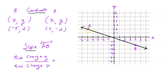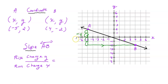Let's make our slope triangle. I'll start at point A — the farthest left point — and then move down and to the right to reach B. How many units did I move down on my slope triangle? That's four units. Since I moved down, it'll be negative four.